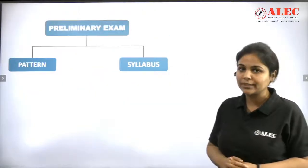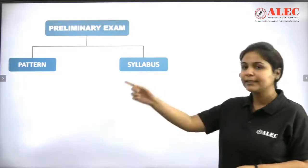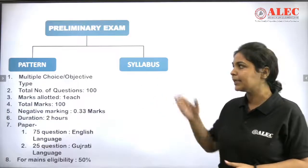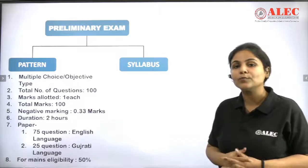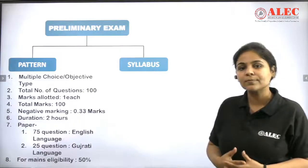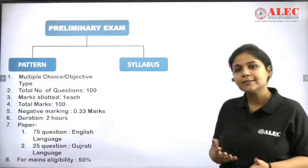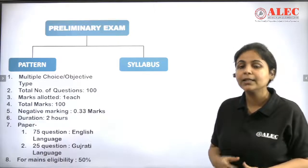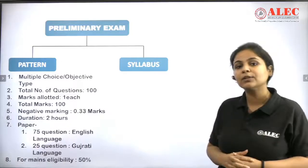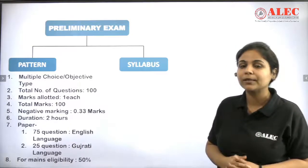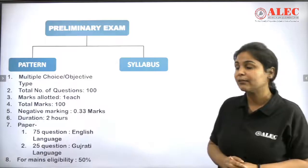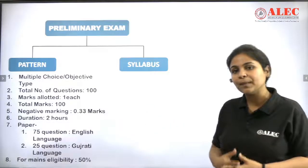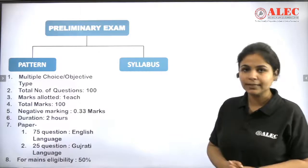First, let's go to the preliminary exam. I have divided it into two parts: Pattern and Syllabus. Let's look at the pattern first. The prelims here will be objective type, multiple choice questions. There will be only one paper in Gujarat in the preliminary. There will be 100 questions and every question is one mark, so the total marks will be 100. But here there is a negative marking of 0.3. You will have 2 hours of time for the paper.